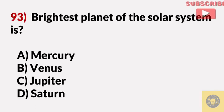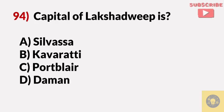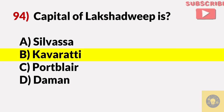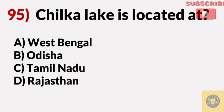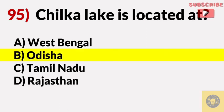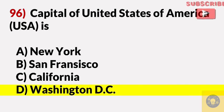The brightest planet of the solar system is? Answer B, Venus. The capital of Lakshadweep is? Answer B, Kavaratti. Chilika Lake is located in? Answer B, Odisha. The capital of the United States of America is? Answer D, Washington, D.C.